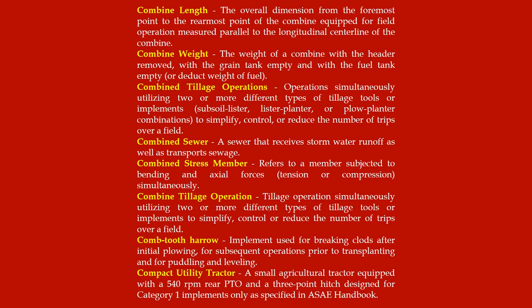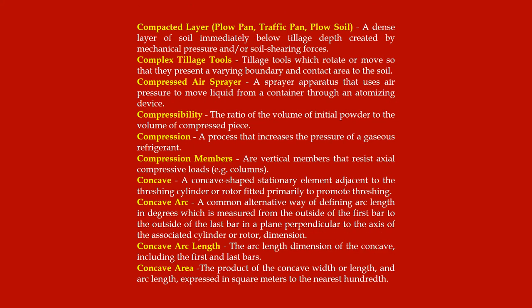Compacted layer (plow pan, traffic pan, plow soil): a dense layer of soil immediately below tillage depth created by mechanical pressure and/or soil shearing forces. Complex tillage tools: tillage tools which rotate or move so that they present a varying boundary and contact area to the soil. Compressed air sprayer: a sprayer apparatus that uses air pressure to move liquid from a container through an atomizing device.